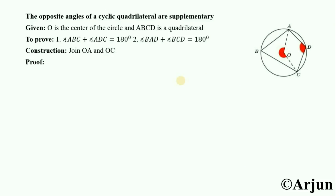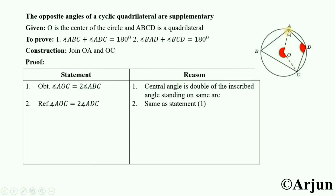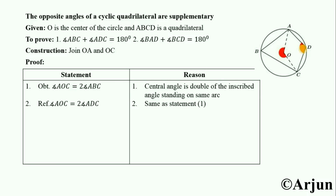Now, reflex angle AOC is a reflex angle, which is greater than 180 degrees. In statement one, AOC was the obtuse angle, but here reflex angle AOC is the central angle standing on arc AC, and angle ADC is the inscribed angle standing on arc AC. By the relation between central angle and inscribed angle, reflex angle AOC equals two times angle ADC, and the reason is the same as statement number one.